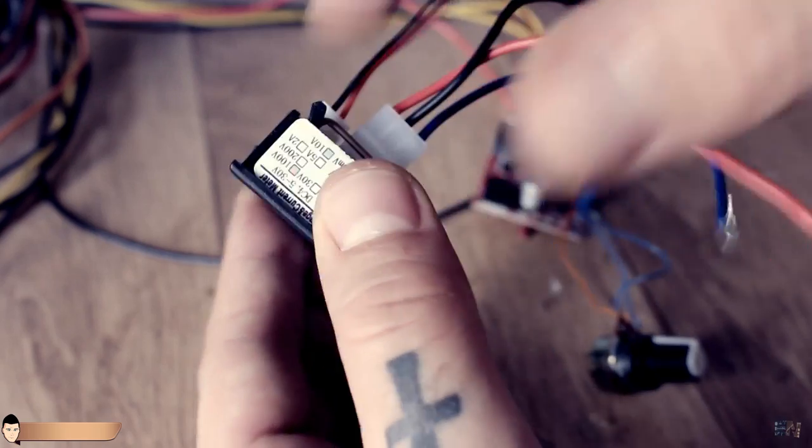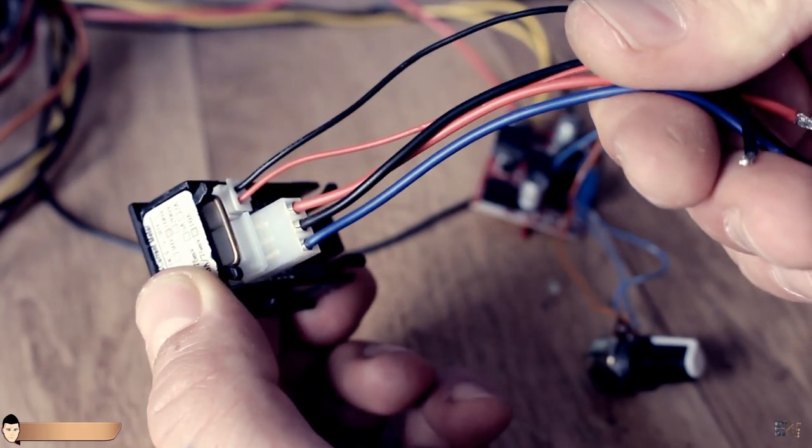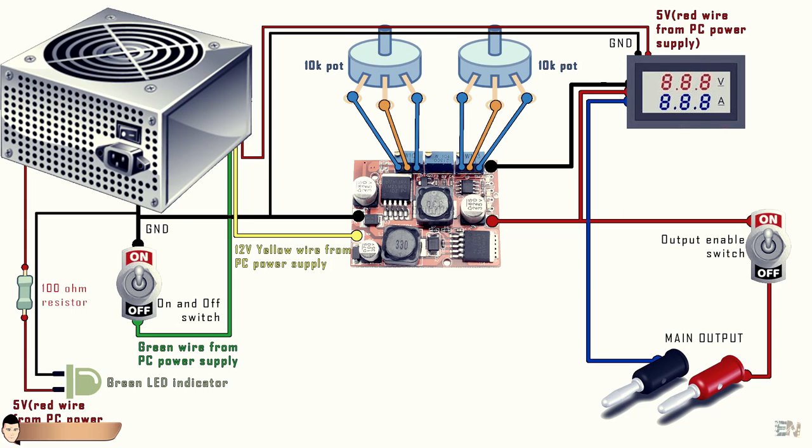Next I connect the voltmeter and ammeter module. Remember that the voltage is measured in parallel and current in series, so use this schematic to connect the module.